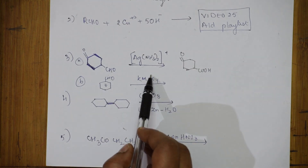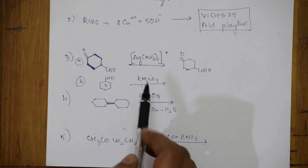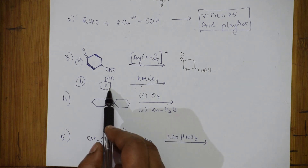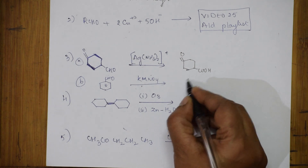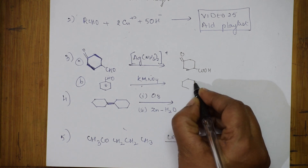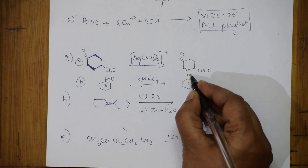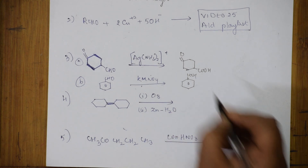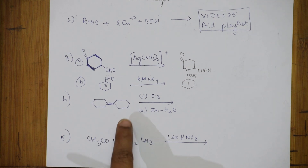Next, KMnO4 is again an oxidizing agent. Aldehydes on oxidation also give acids with KMnO4. The product is benzoic acid (COOH group on benzene ring).